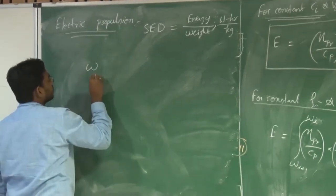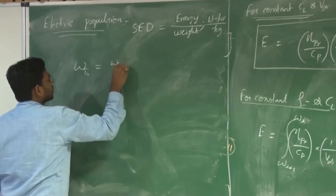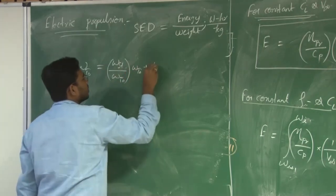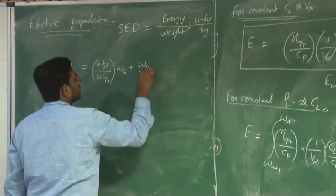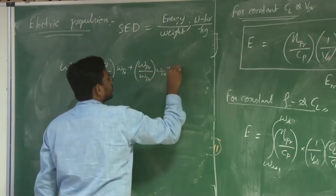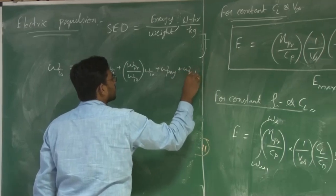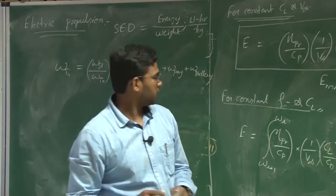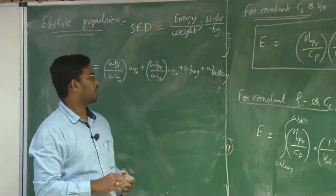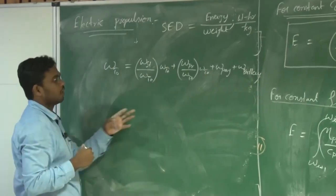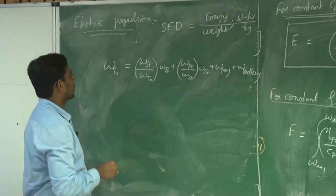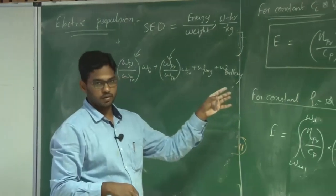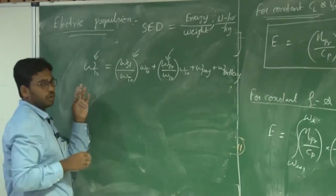Going back to the weight equation for an electric UAV: overall takeoff weight = structural weight ratio × W_takeoff + propulsion weight ratio × W_takeoff + payload + battery weight. This is different from the fuel-based system. For the structural weight ratio and propulsion weight ratio, we use the historical database, and we also take an initial overall takeoff weight from the historical database.